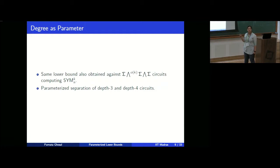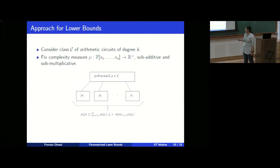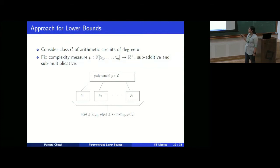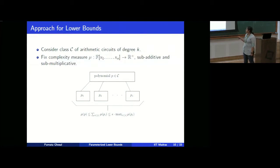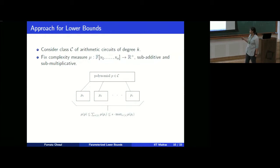The degree as parameter seemed interesting in general. The general way to prove lower bounds is: if we have some polynomial P which is a sum of P_1, P_2, ..., P_s, and if we have a complexity measure giving some positive real value for every polynomial, we can upper-bound the measure for P by the sum of the measures for individual building-block polynomials, and that is bounded by s times the maximum measure for any P_i.